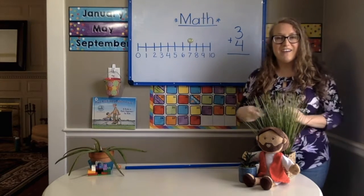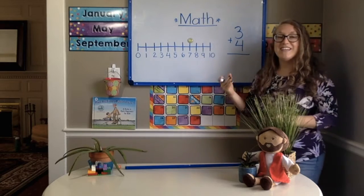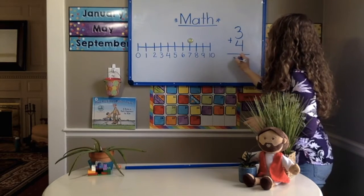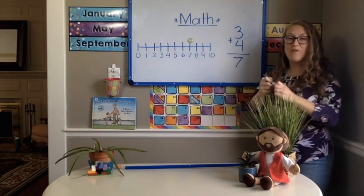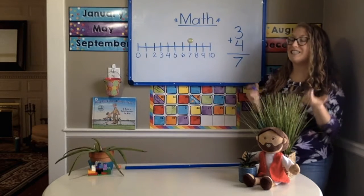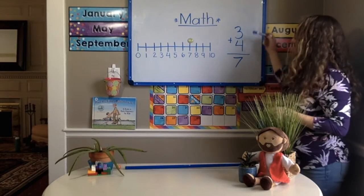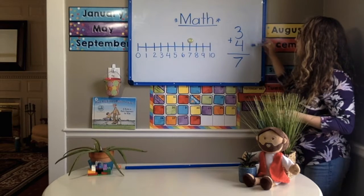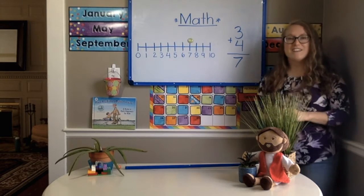1, 2, 3, 4. What number did you land on kindergarten? I landed on 7. Let's read what our addition problem says today. It says 3 plus 4 equals 7. Good job, kindergarten.